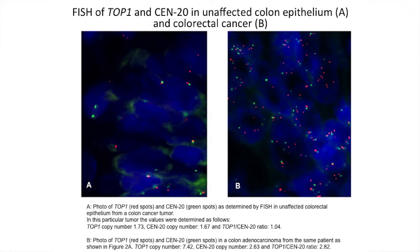A FISH analysis from one of our studies — done together with Kirsten and her group at DAKO — was performed on paraffin sections. Here is a diploid cell with two green dots: that's the centromere probe, a reference probe on centromere 20, where the TOP1 gene is located, and the red dots are the TOP1 gene — diploid cells have only two of each. But in an amplified cancer, you can see there are many more red dots than green dots, indicating amplification or gain of the TOP1 gene. It's easy to quantitate, though it takes time.